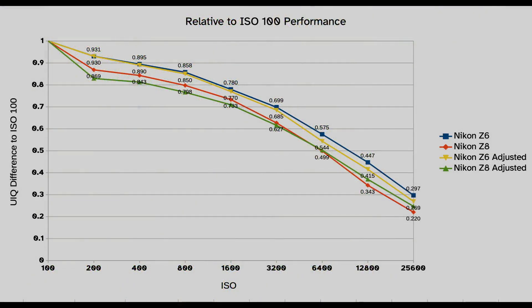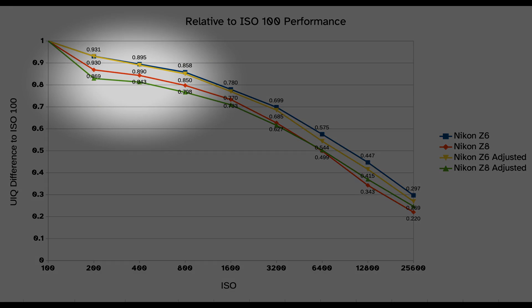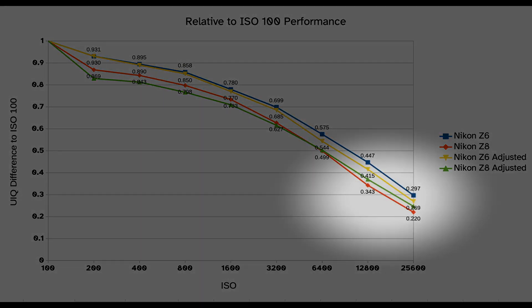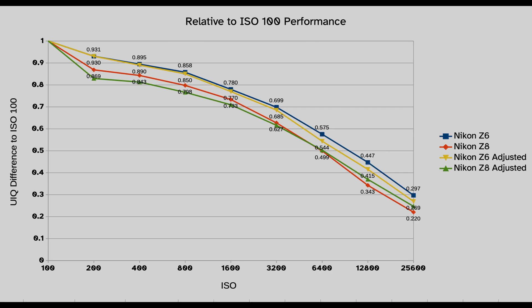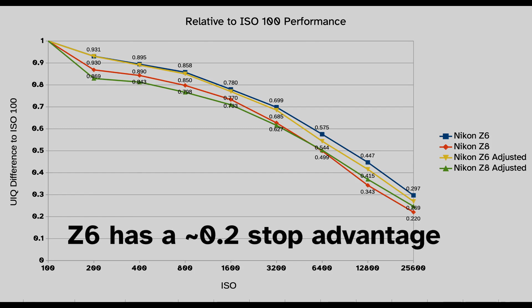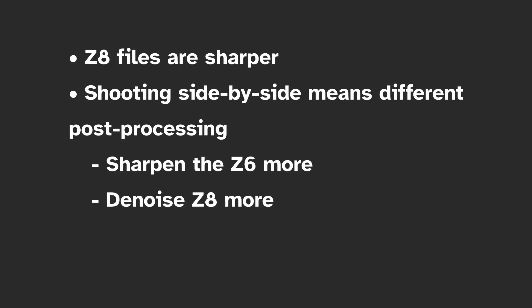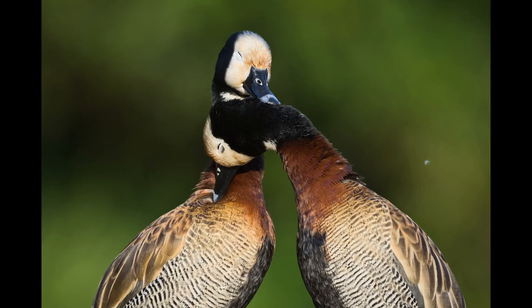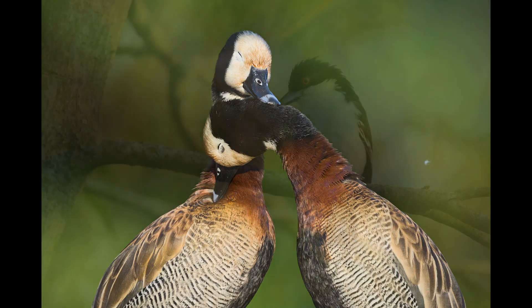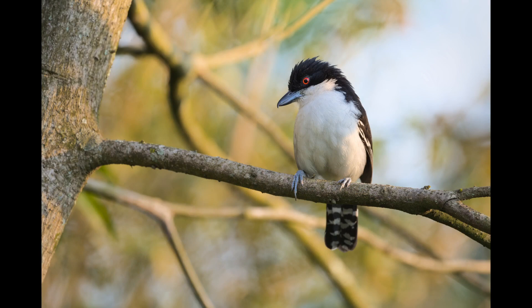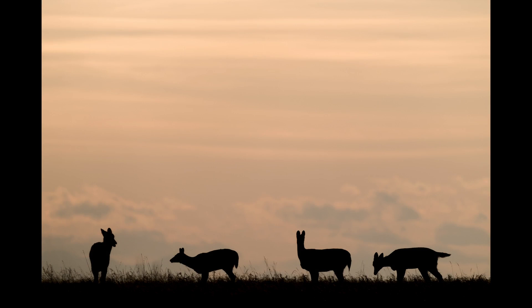With the new adjusted Z8 file, we get some interesting UIQ results. The Z8 files suffered a bit at low ISO from denoising, but at high ISO we gained a little performance, bringing the Z8 closer to Z6-like performance. The difference between the two is now 20% of a stop — one-fifth of a stop. After these adjustments, the Nikon Z6 and Z8 are very close and much closer than what a lot of people claim. That said, when both cameras are equalized for resolution, the Z6 files do look slightly cleaner at all ISOs even when accounting for differences in post-processing.